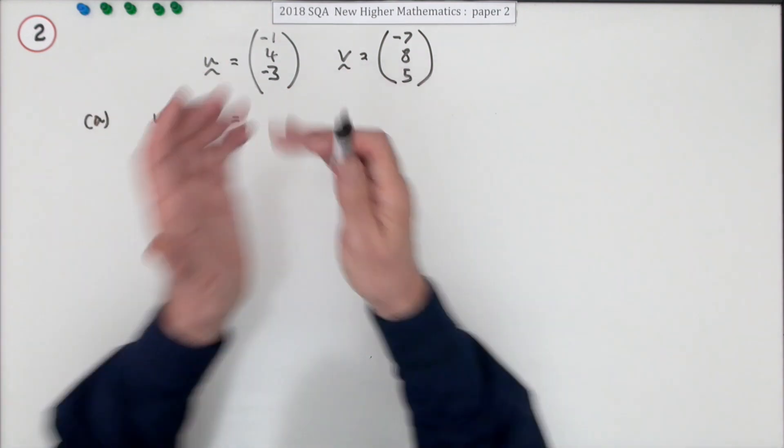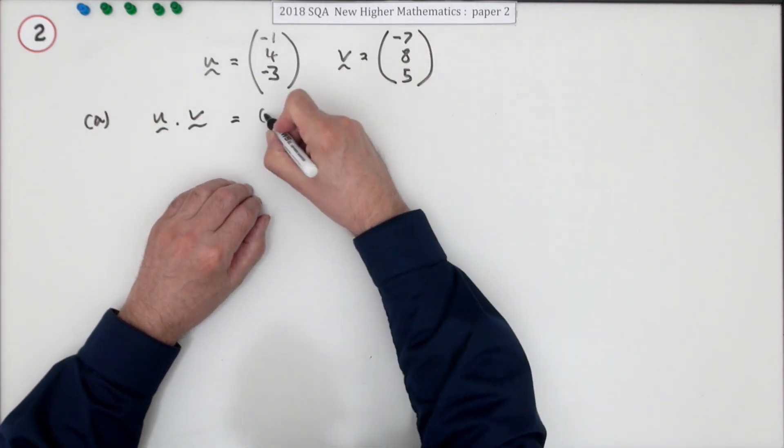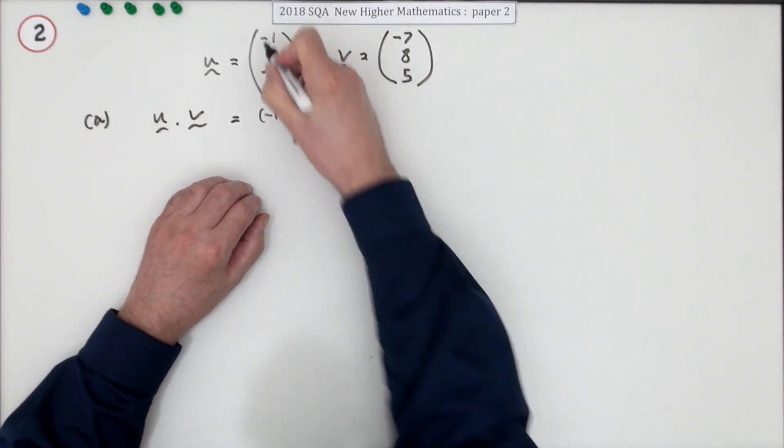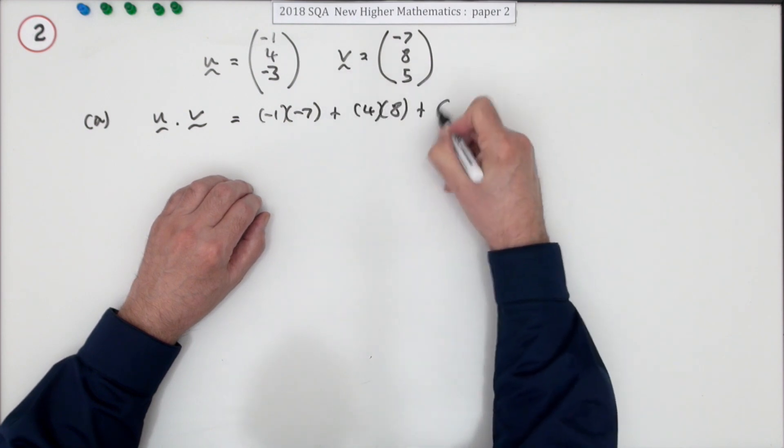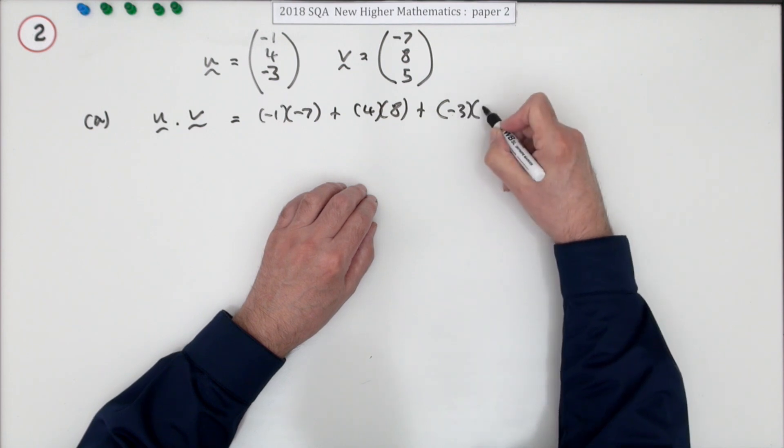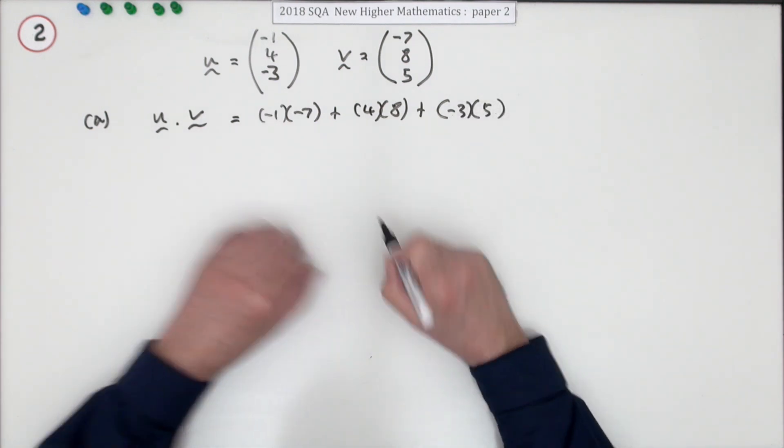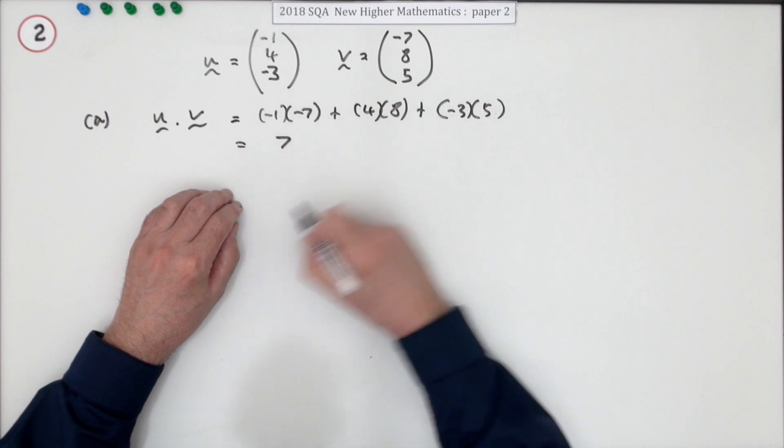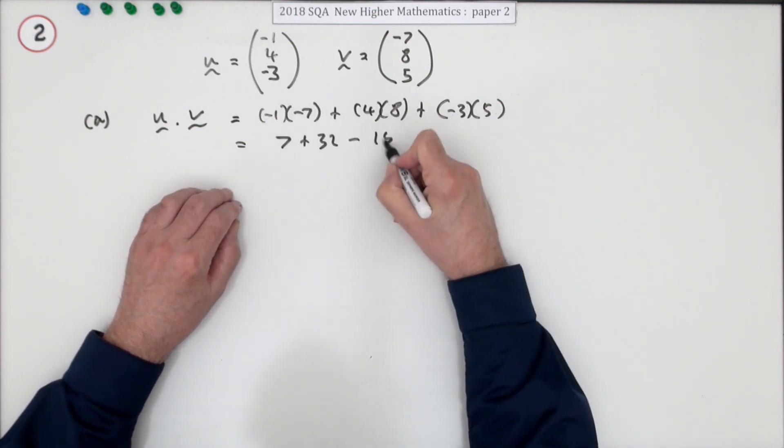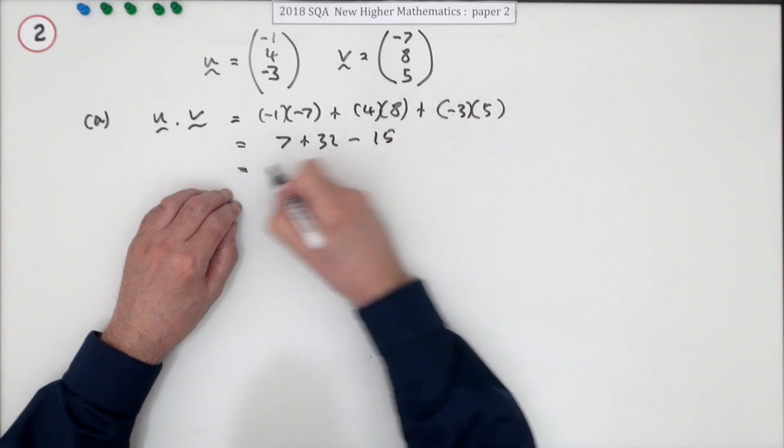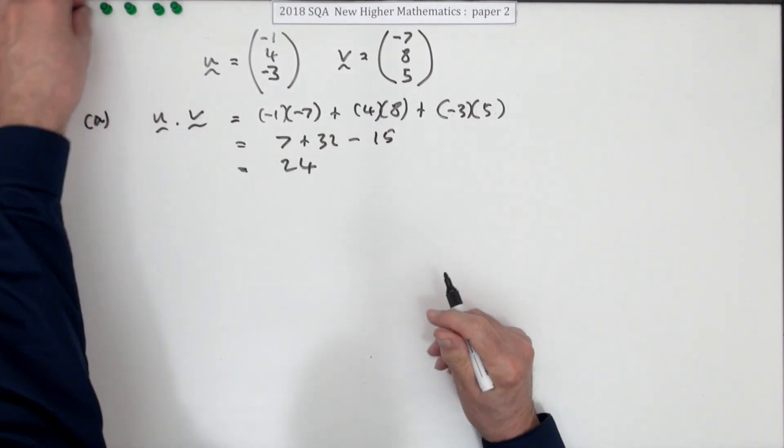So it's negative one times negative seven, plus four times eight. I'll put them all into little handy containers, which comes to seven plus 32 minus 15, so that will be 24, and that gets a mark.